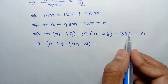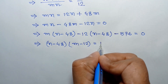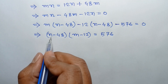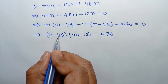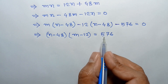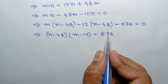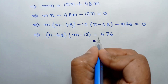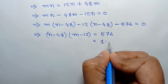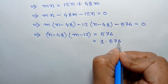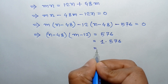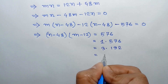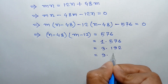Taking (n minus 48) as a common factor gives (n minus 48)(m minus 12) equals 576. Since n is odd, n minus 48 is also odd. The odd factors of 576 are 1, 3, and 9, so we can write: 1 times 576, 3 times 192, and 9 times 64.